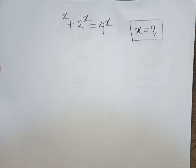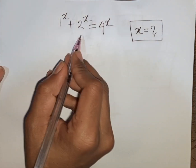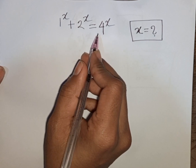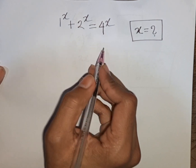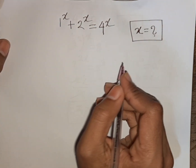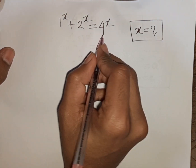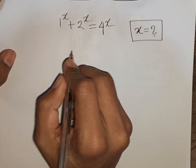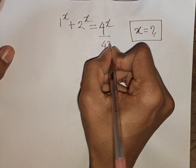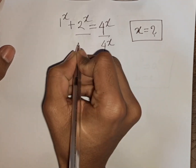How to solve 1/4^x plus 2/4^x is equal to 4^x — find the value of X. First, we divide both sides by 4^x.